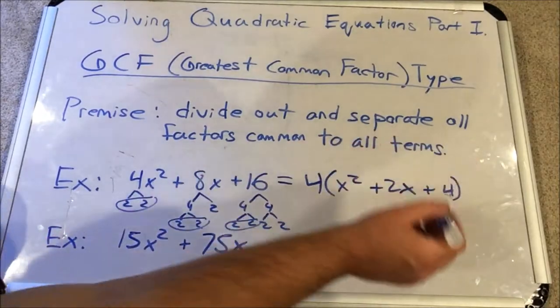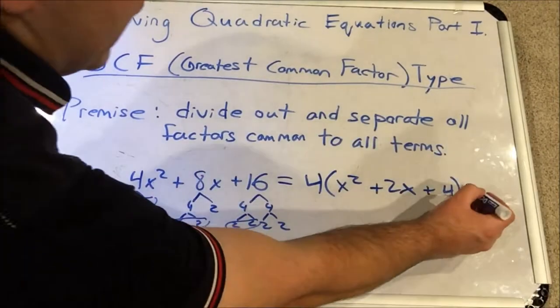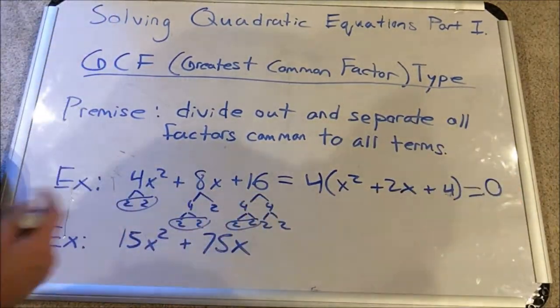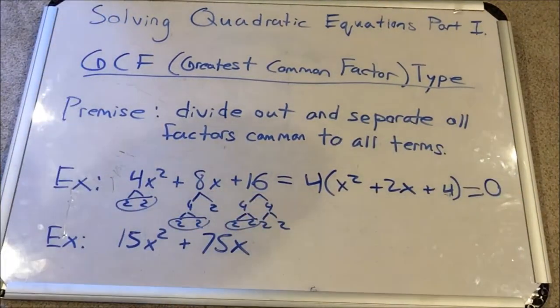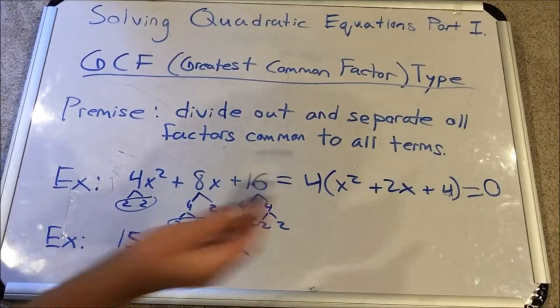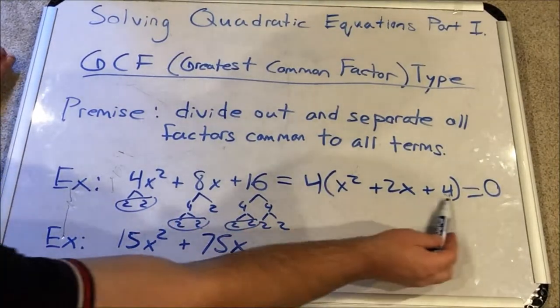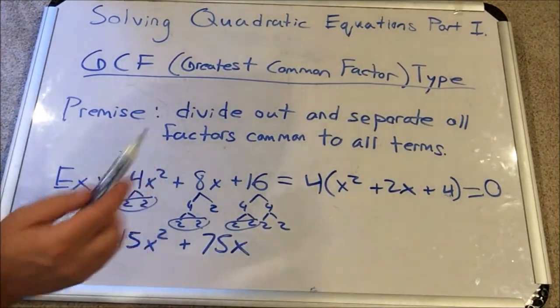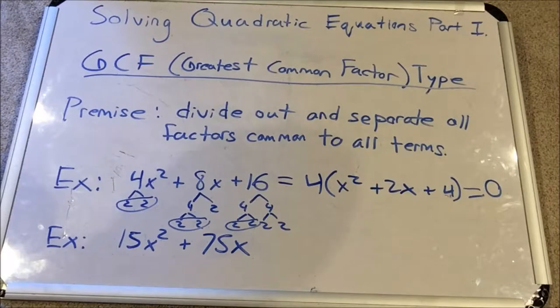So here we have this expression factored: 4 times (x squared plus 2x plus 4). Of course, if it's an equation it's usually set equal to zero, which is the most common way we solve these, and we would use another method to continue factoring. But we started with greatest common factor.